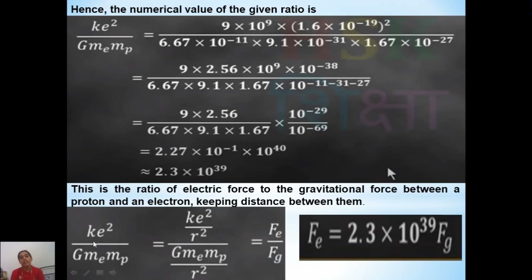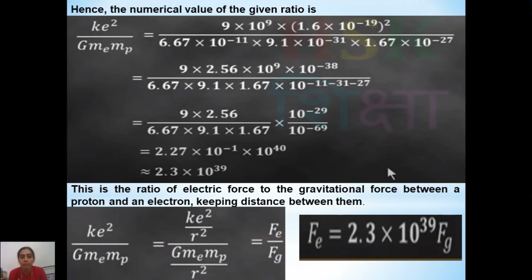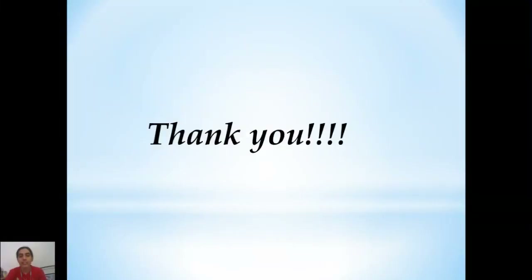Since this ratio equals 2.3 into 10 to the power of 39, we can say that the electrical force between an electron and a proton is 2.3 into 10 to the power of 39 times greater than the gravitational force between them. This is the significance of this ratio. I hope you understood this session. In the next session we will solve a few more numericals. Till then, take care.